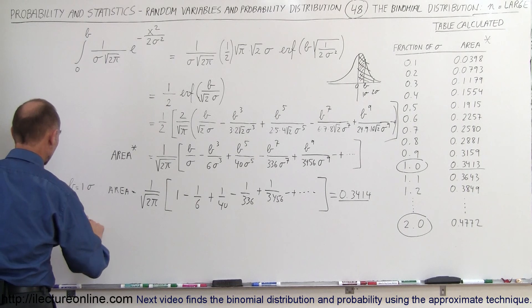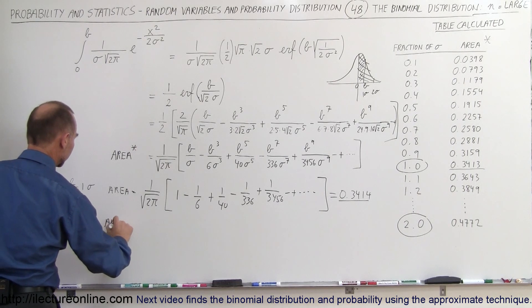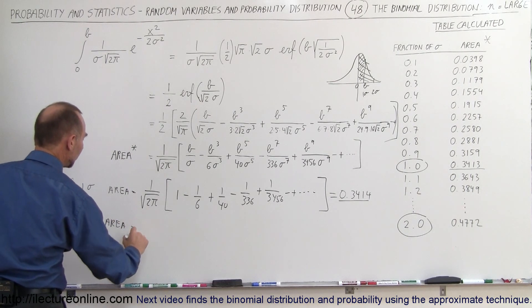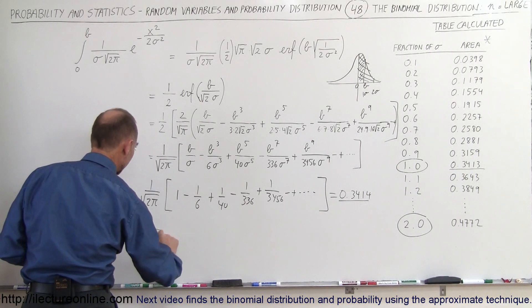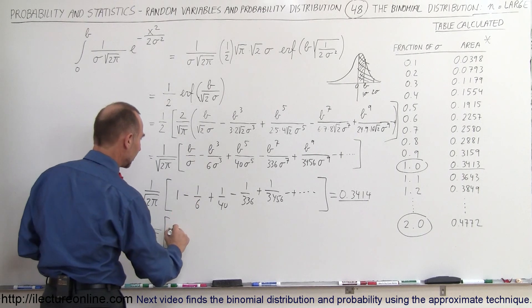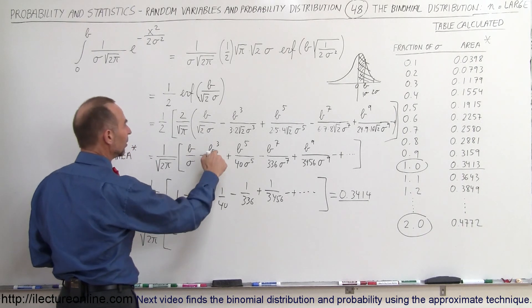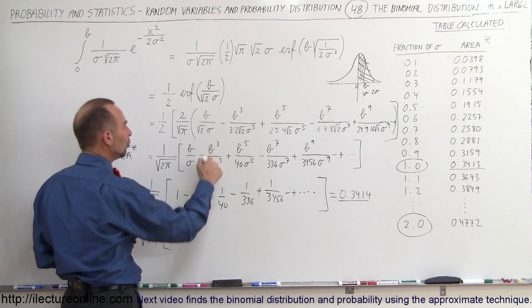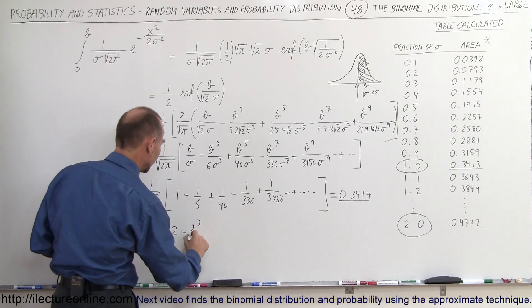So, when B is equal to two sigma, the area is going to be equal to one over the square root of two pi times, now notice, B is going to be two sigma, so we end up with two minus, so that would be two sigma, that would be two cubed, divided by six.